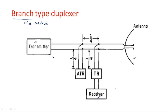We need to isolate the signal going from the transmitter to the antenna to prevent it from entering the receiver. Likewise, the received signal should go directly from the antenna to the receiver and should not enter the transmitting section. The branch type duplexer uses two types of gas discharge tubes: ATR and TR.